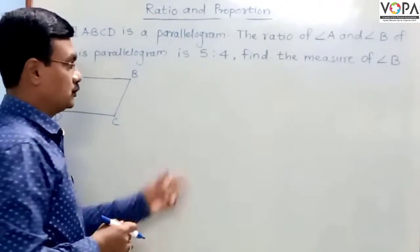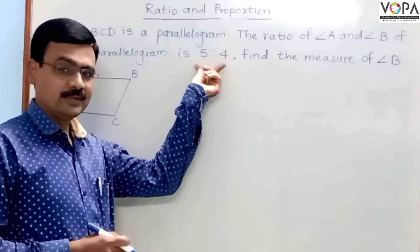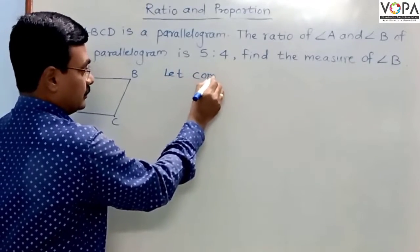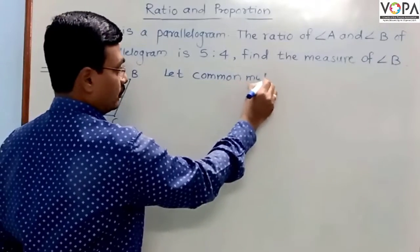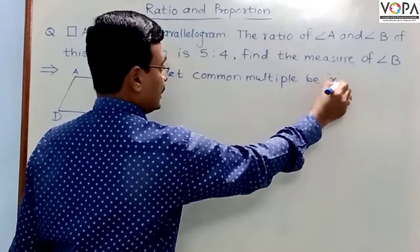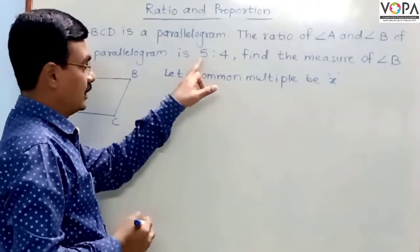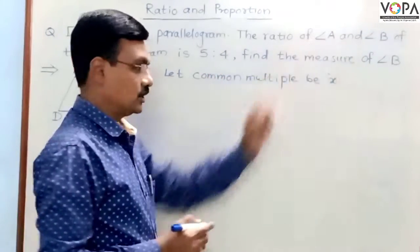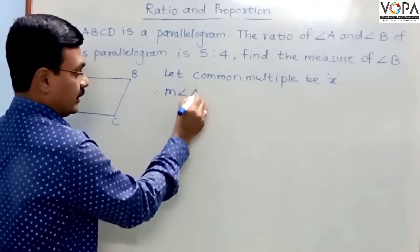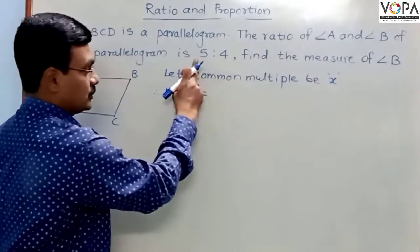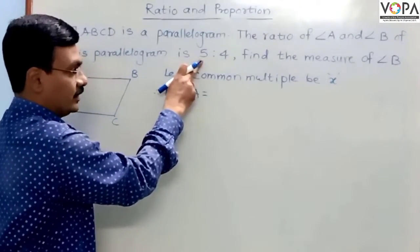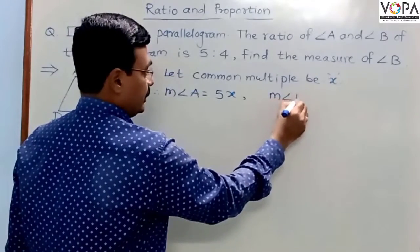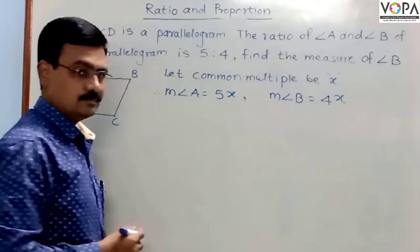In case of examples of ratio, we often use common multiple. Let common multiple be x. If the common multiple is x, measure of angle B equals to 4x. Our ratio is 5 to 4, so we can write measure of angle A equals to 5x. Measure of angle B equals to 4x.